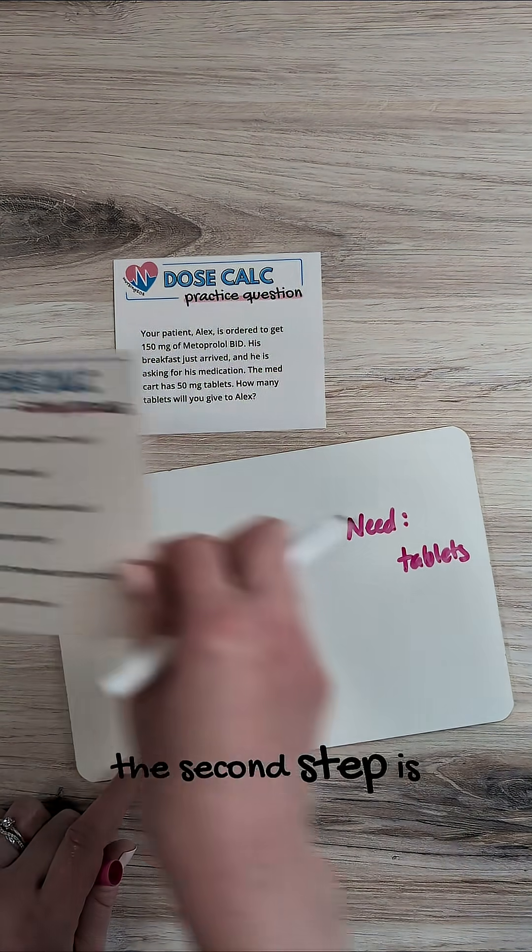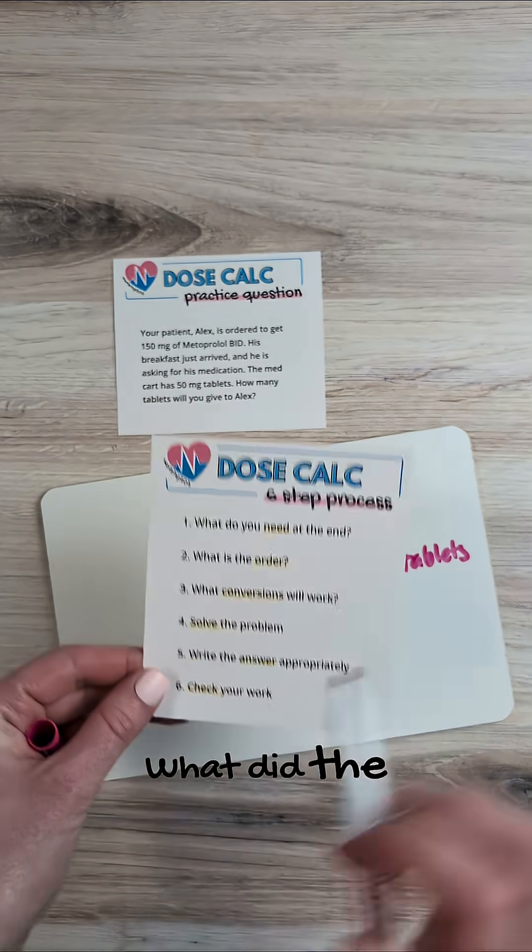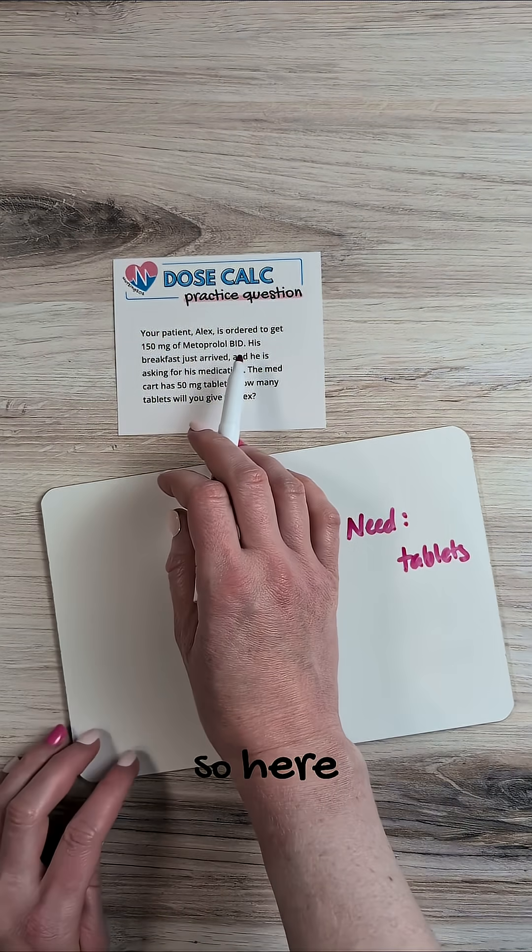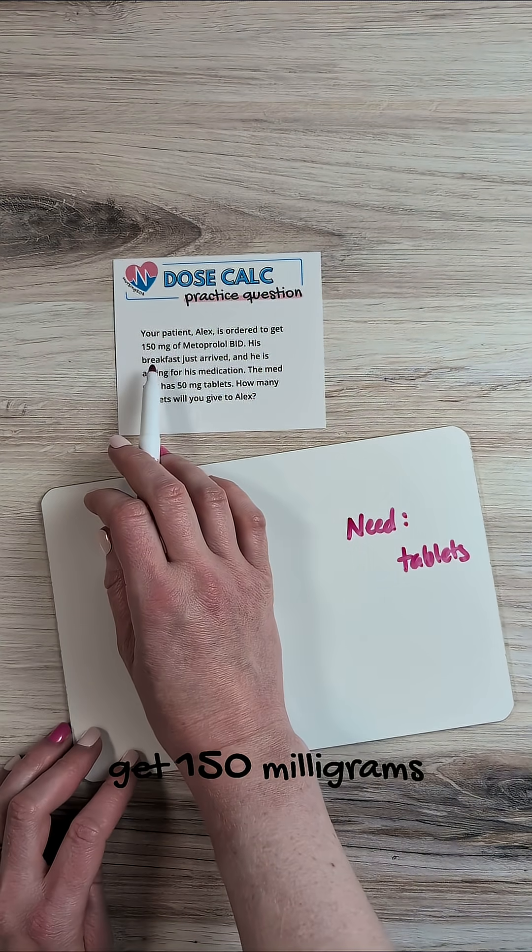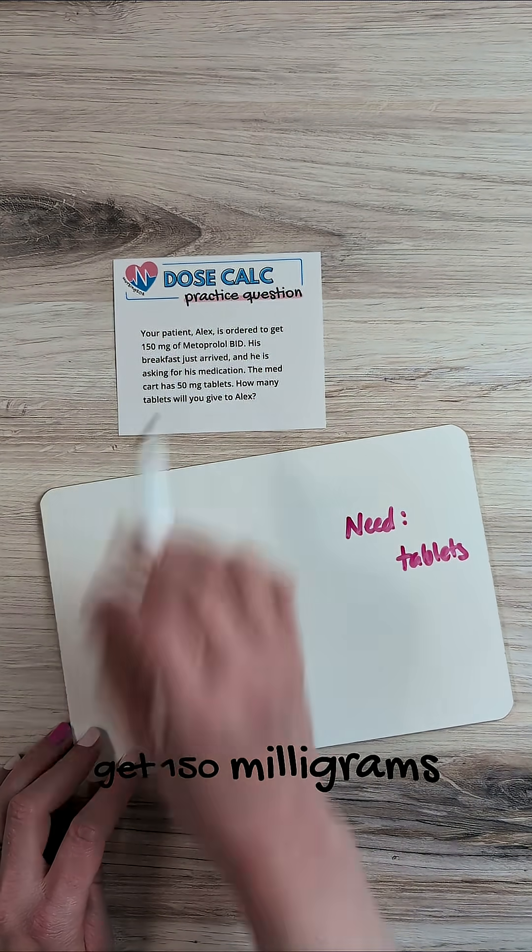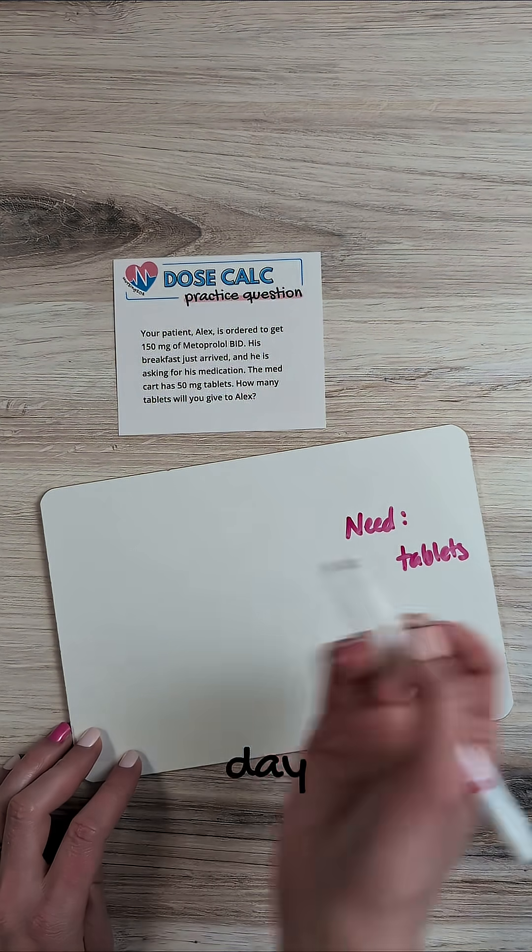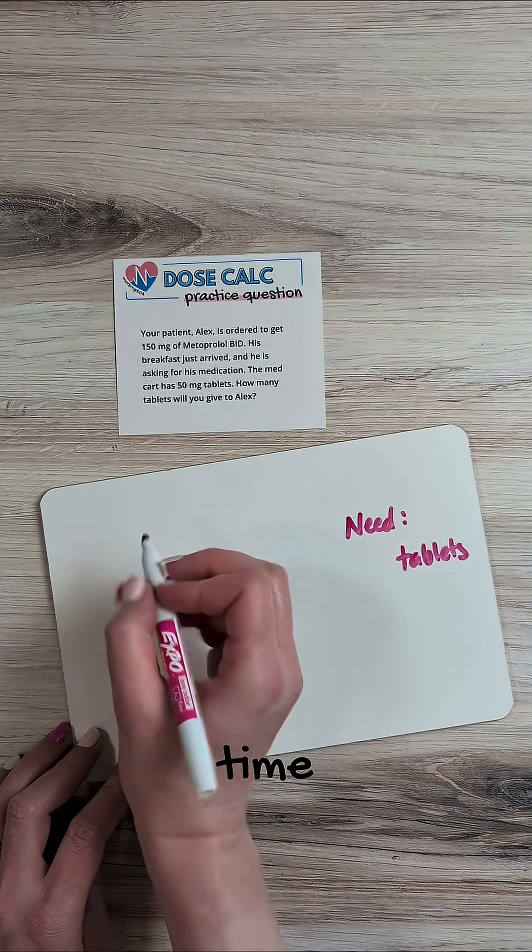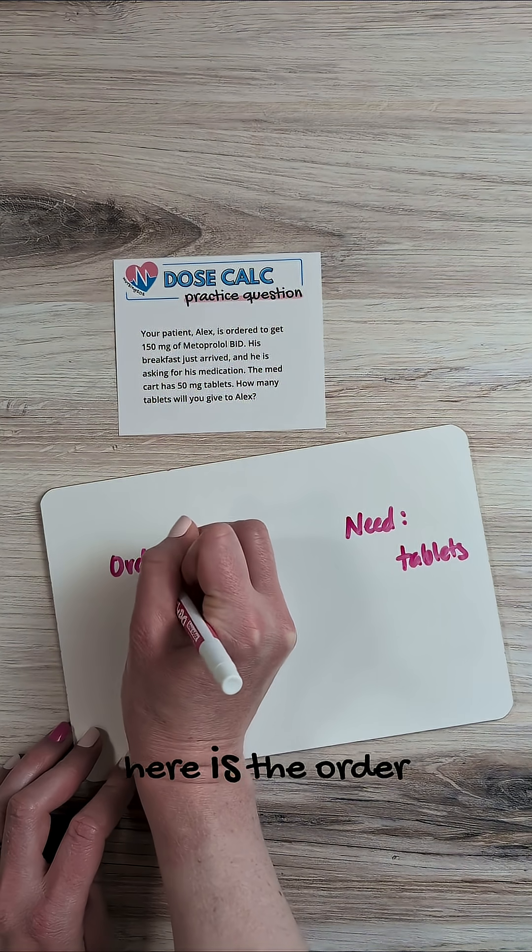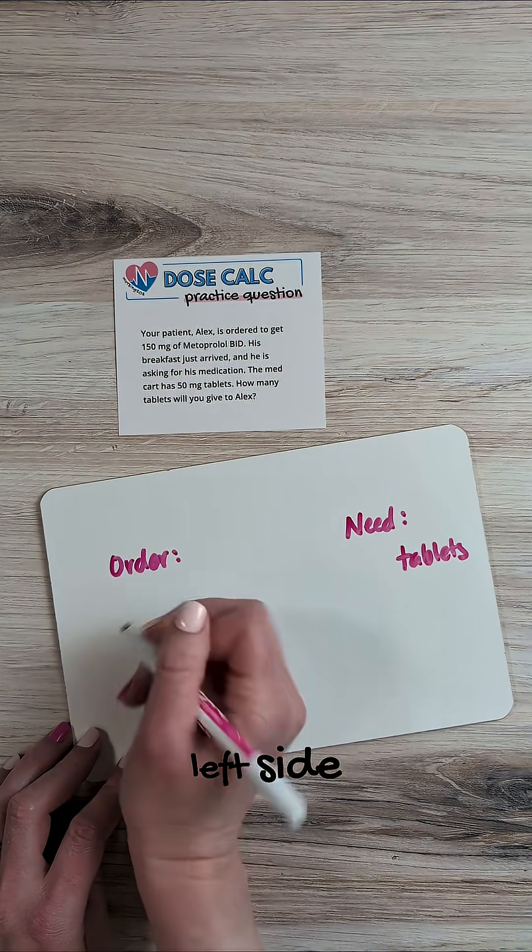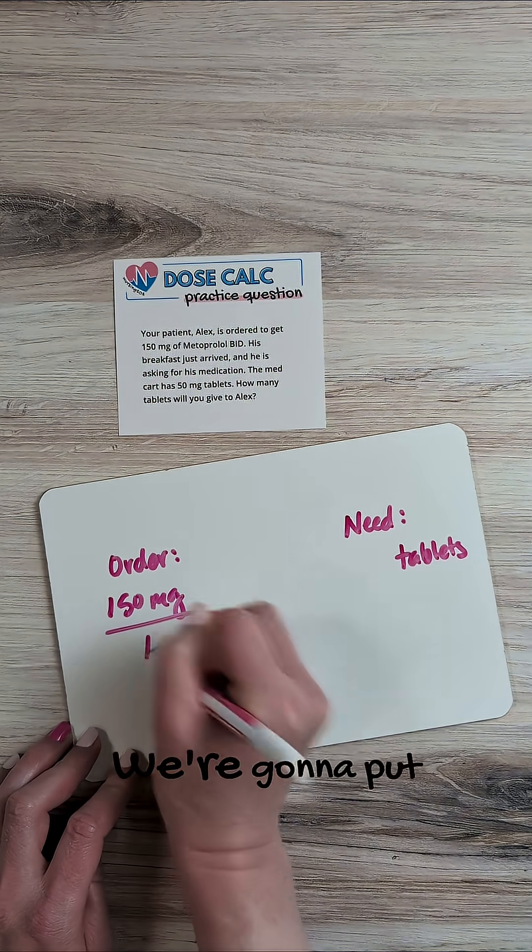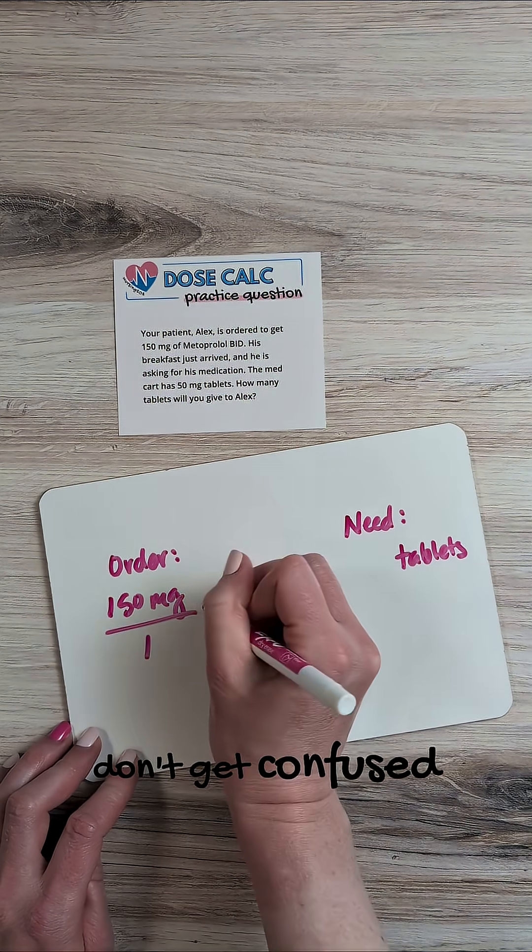Now, the second step is what is the order? What did the doctor actually order, the prescriber order? So here, Alex is ordered to get 150 milligrams of metoprolol twice a day. So we're talking about how many tablets we're going to give to him this time. So what we have here is the order over here on the left side, and that's 150 milligrams. We're going to put that over once so we don't get confused.